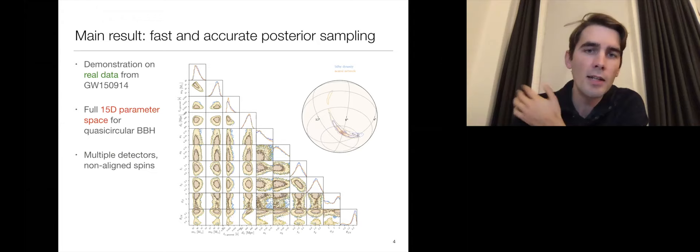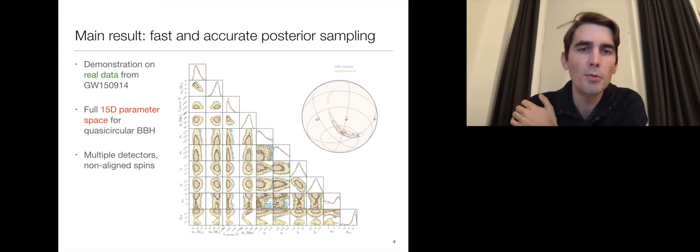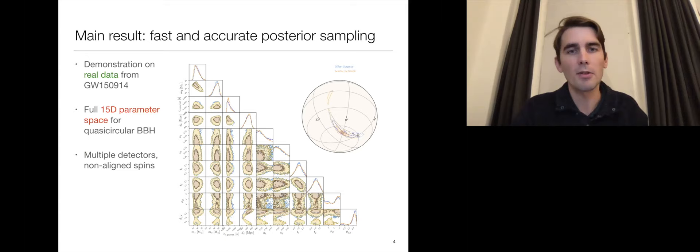So here's the main result. We trained the network with simulated binary black hole data in the full 15-dimensional parameter space. We generated waveforms, added stationary Gaussian noise realizations. Then once the network was trained, we fed in the actual strain data from the first gravitational wave detection, GW150914, and performed inference.